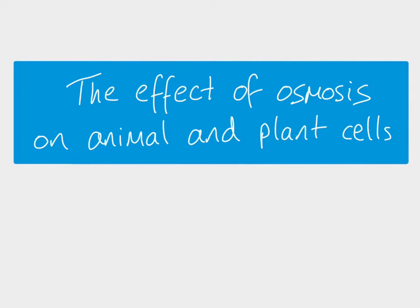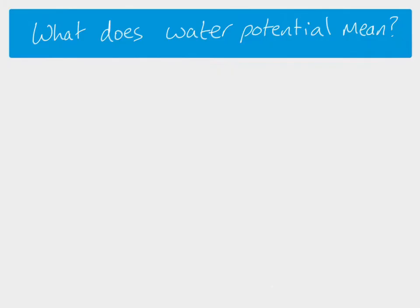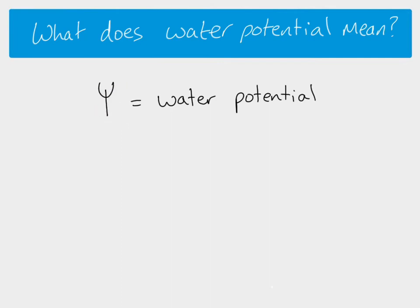In this video we are looking at osmosis and the effect of osmosis on animal and plant cells. When we're talking about osmosis it's all about the movement of water, and we use the term water potential to help us describe what's going on. We use the letter psi — this symbol here — to mean water potential.